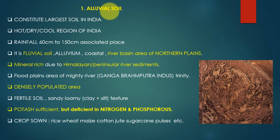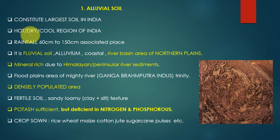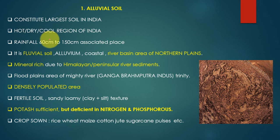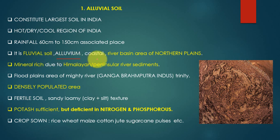The first soil is alluvial soil. This soil constitutes the largest soil group in India. It is found in areas with hot, dry, and cool regions. Alluvial soil is also found in a few parts of Rajasthan. Rainfall associated with this soil ranges from 60 centimeters to 150 centimeters. It is a fluvial or depositional soil, also known as alluvium, found in river basin areas of the northern plains.